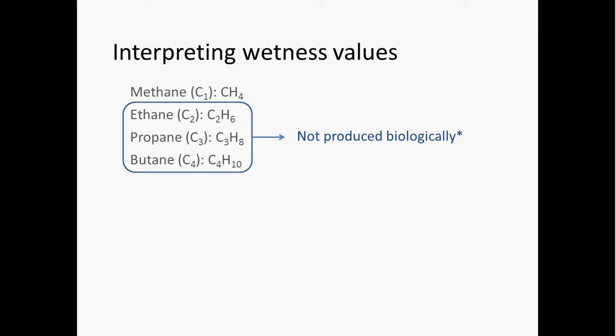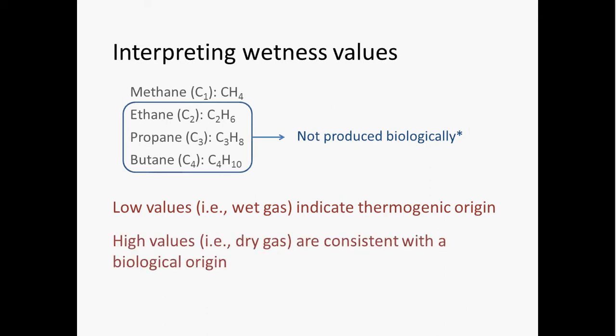So because of this, when you see low wetness values, it indicates a significant portion of the gas was produced thermally. We assume that that's the only way you can get these higher chain hydrocarbons is thermally, thermogenic degradation. And then when you see high wetness values, they're consistent with a biological origin of that gas. And let me stress the word consistent, because there are some exceptions.